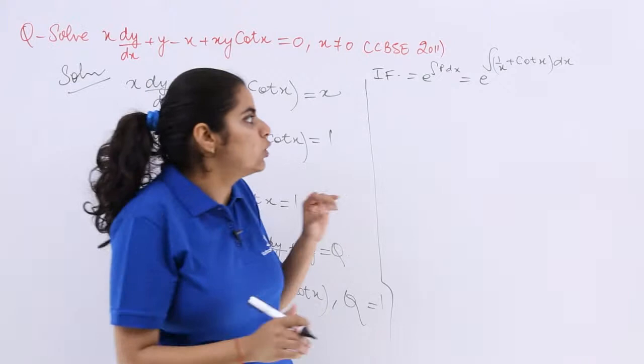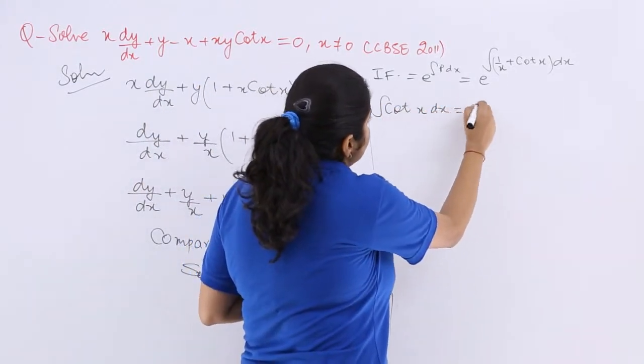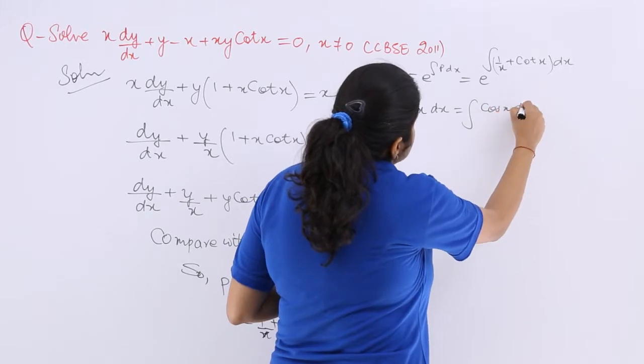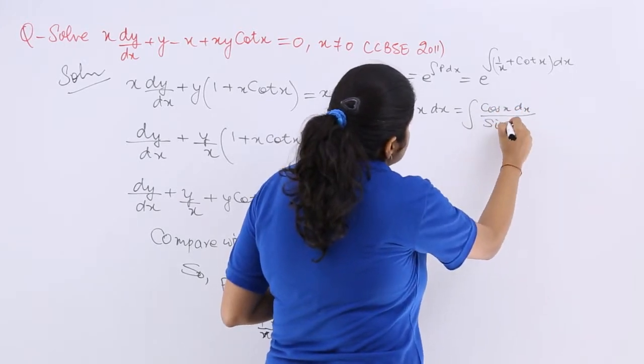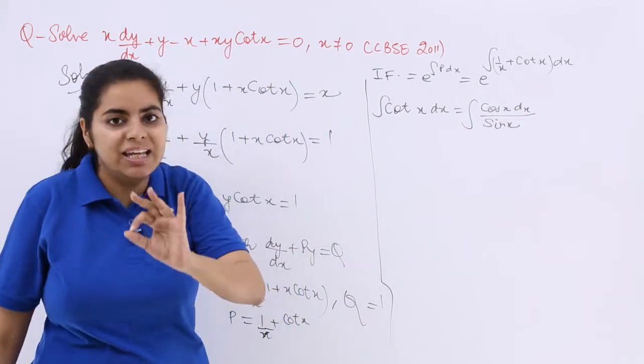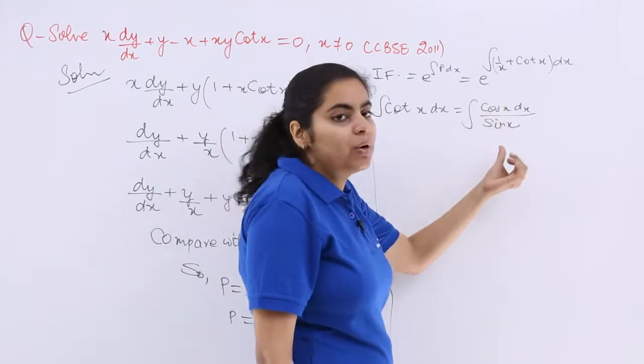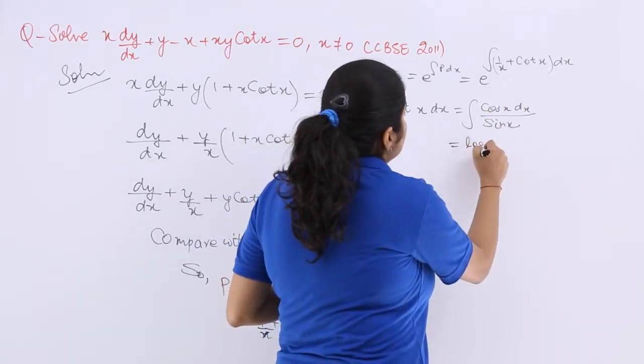Now what is the differentiation of sin x? It is cos. So do not panic. If I have to separately find out integral cot x dx, so it is integral cos x dx upon sin x. Now if you put sin x = t, cos x dx = dt. Right? So that means here you have dt/t which means log t which is log sin x.